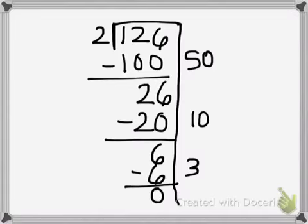And off to the side on the right I can clearly see what all the parts of my quotient are. First I took out 50 groups of 2, then I took out 10 groups of 2, and then I took out 3 groups of 2. And if I add all of those up I can see what my final answer is, what my final quotient is. So we have 63.